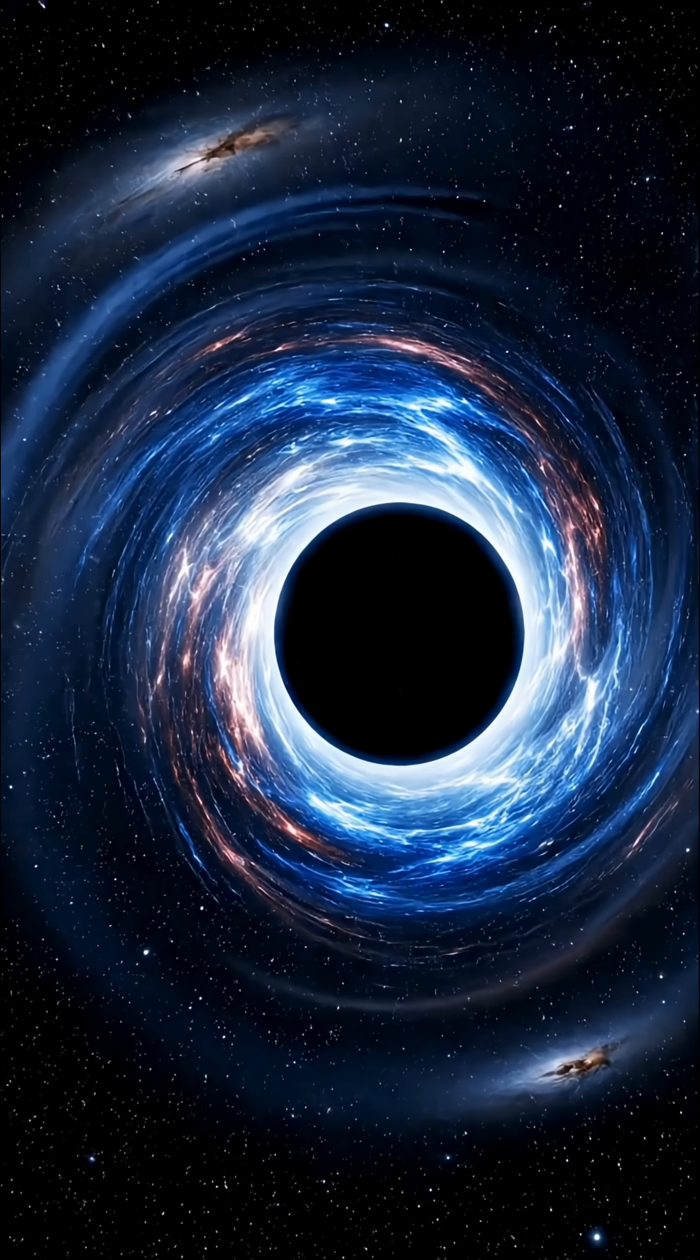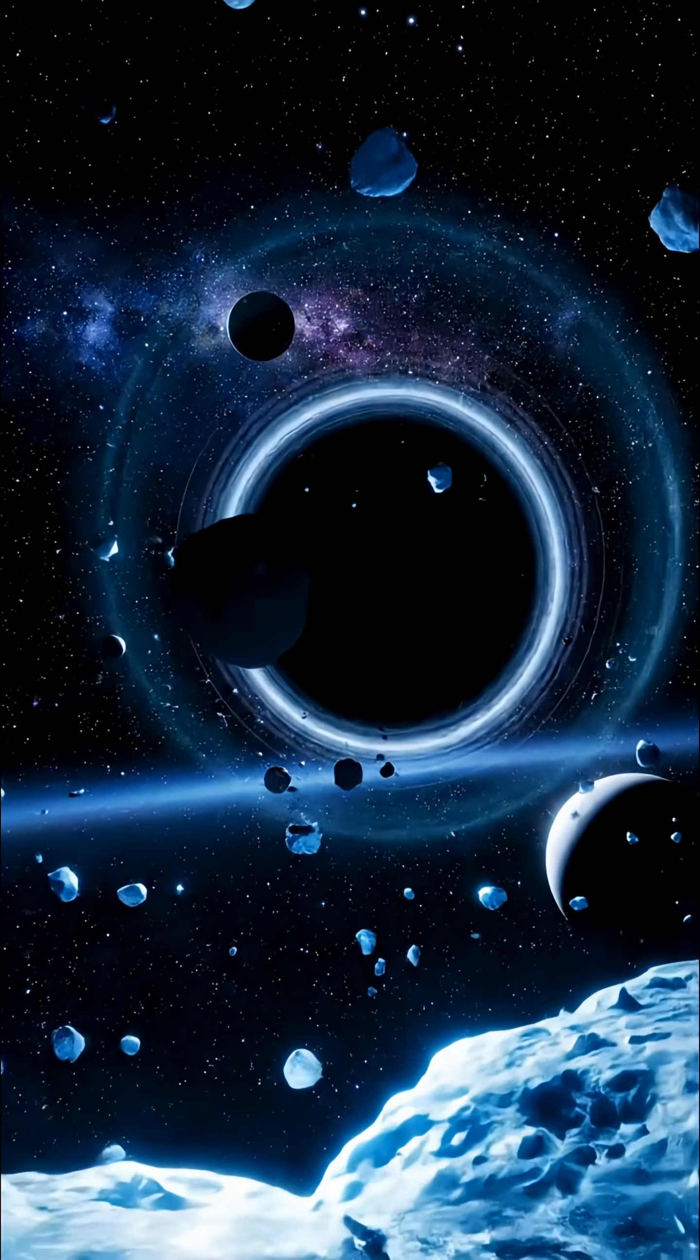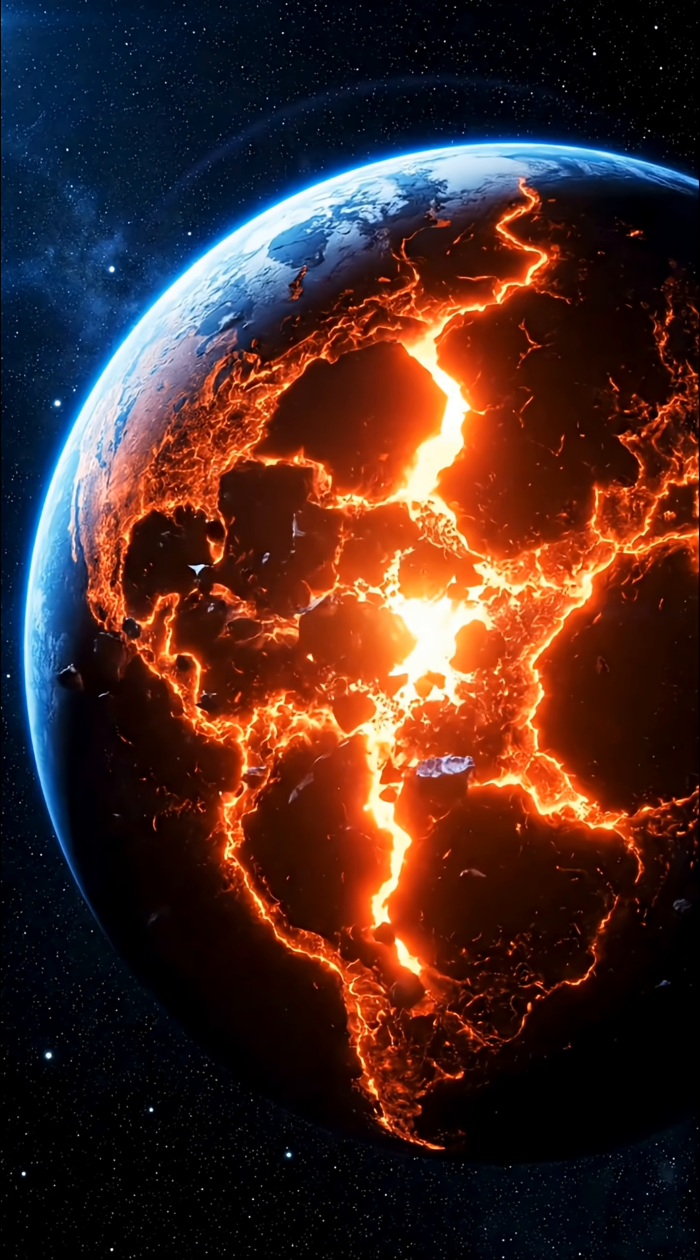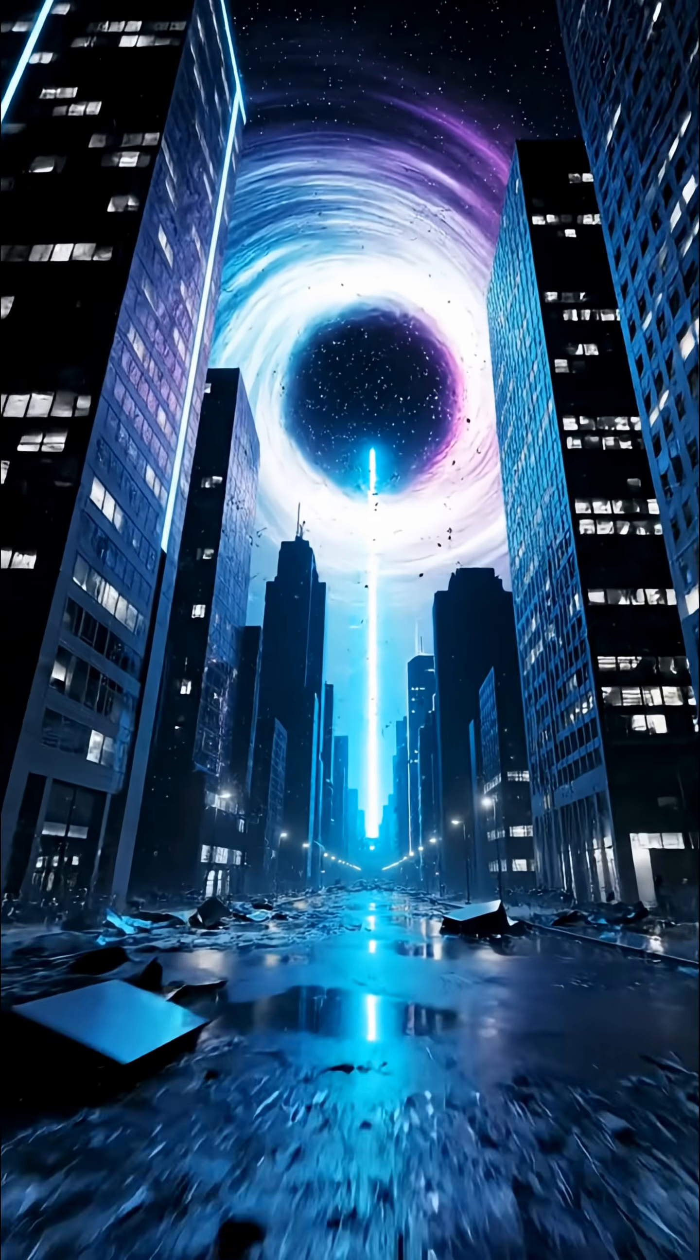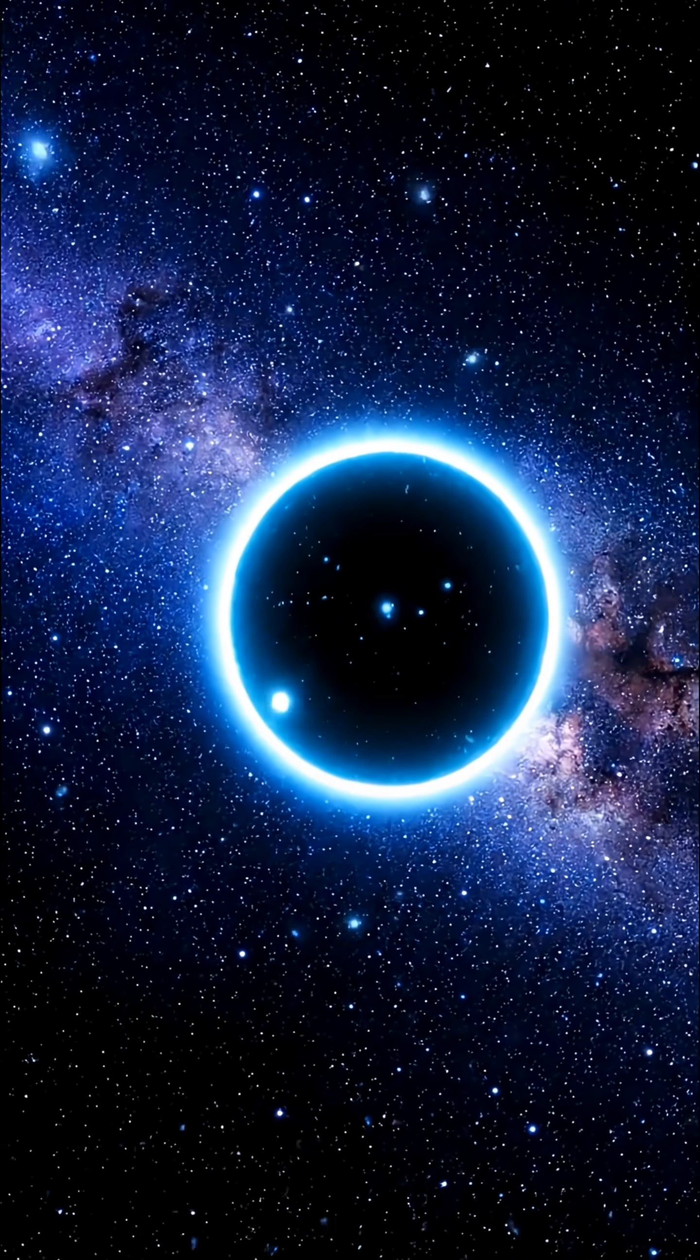Number 2: A rogue black hole. Not all black holes remain anchored to galaxies. A rogue black hole drifting through space could pass silently through our solar system. Its immense gravity would distort planetary orbits, tear Earth apart, and reduce our world to debris—without light, without sound, and without warning.